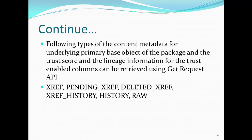We can also get the lineage and trust information with this Get API response. The following types of data can be retrieved using the base object of a particular package. We can also get the trust score and lineage information. The Get request can be used to retrieve data from cross-reference, pending cross-reference, deleted cross-reference, history of cross-reference, history table of the corresponding base object, and raw table of the corresponding base object.